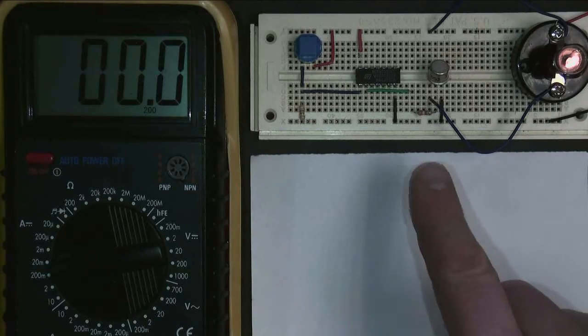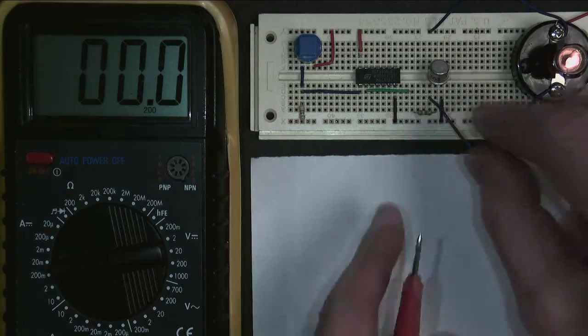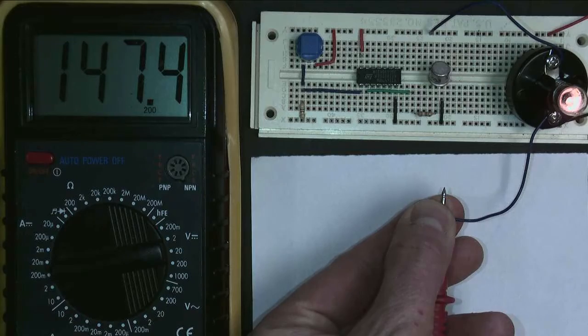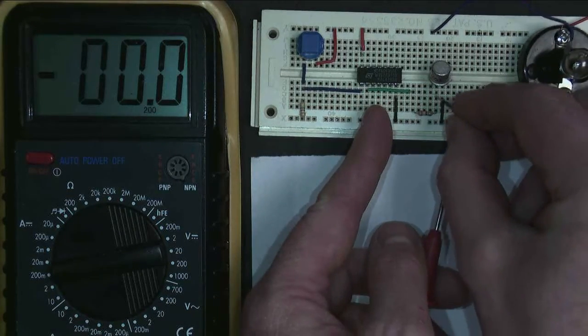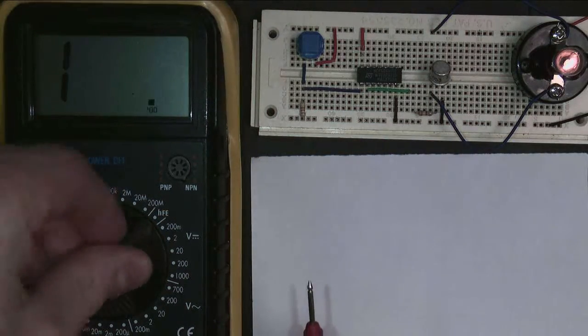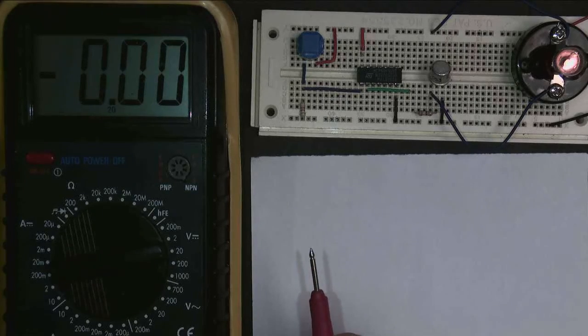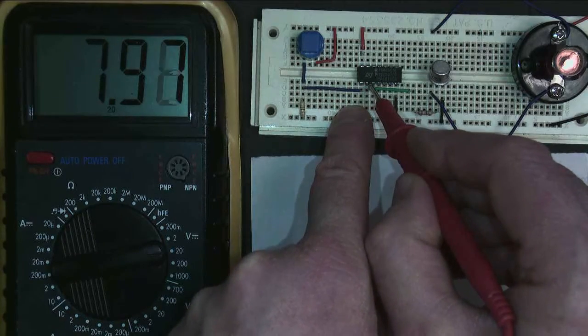Now I'm going to calculate the value of this base resistor. First of all, we need to take some measurements. We'll measure the current that the bulb's taking. That's 150 milliamps using my ammeter. We'll measure the output voltage of the chip. Let's have a look at that. So it's going to be 8 volts.